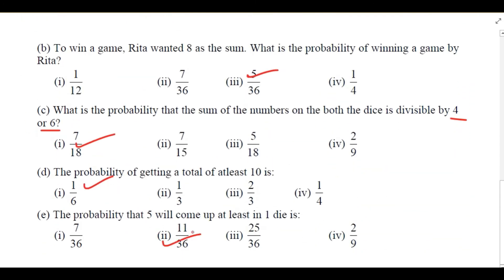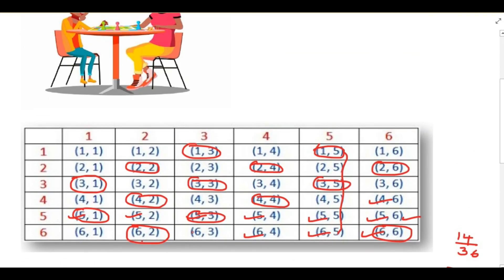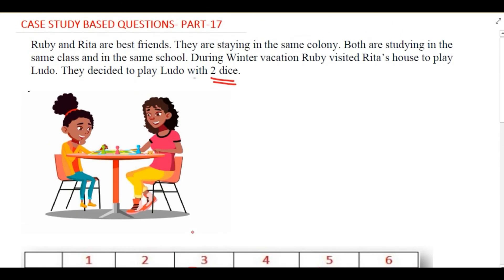In today's video we have seen a case study based question from the chapter probability. When you throw 2 dice, the total possible outcomes are 6 times 6, which is 36. Whatever question is given, according to that we can write the favorable outcomes and find the answer. Thank you for watching my video.